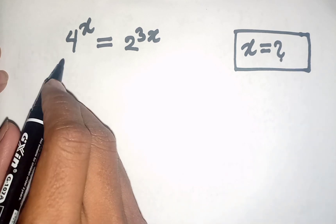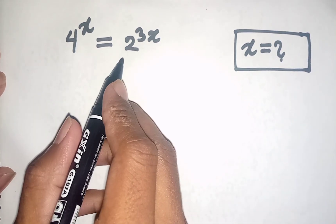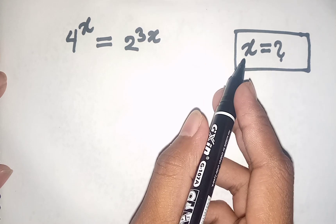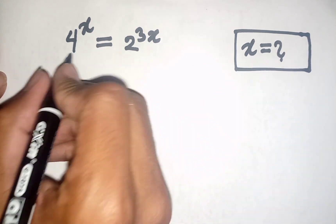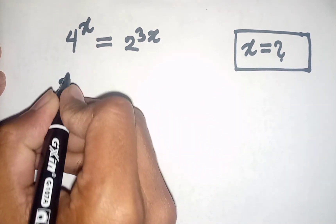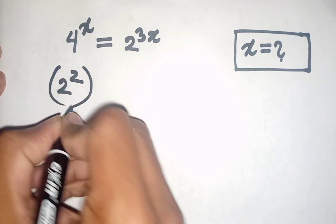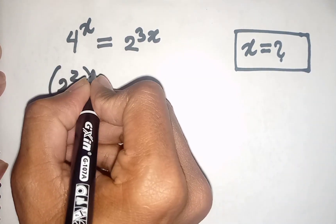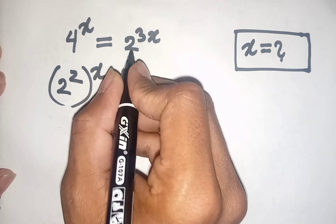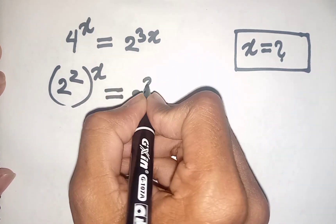How to solve 4 power x is equal to 2 power 3x — find the value of x. We have 4 power x, which is the same as 2 power 2, bracket power x, is equal to 2 power 3x.